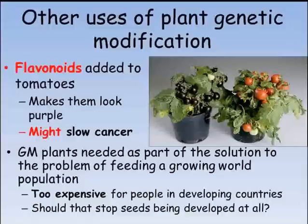Another example of producing transgenic plants is adding flavonoids into tomatoes to produce purple tomatoes. There is some evidence that flavonoids might slow the growth of cancers. The cost of plants such as this is very high, meaning they are simply not affordable in the developing world where they are most likely to be needed.